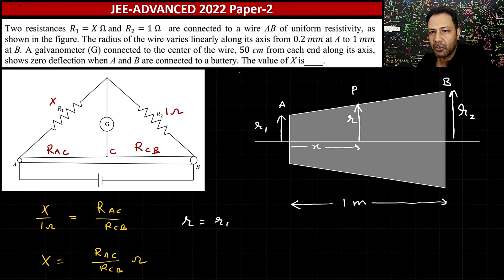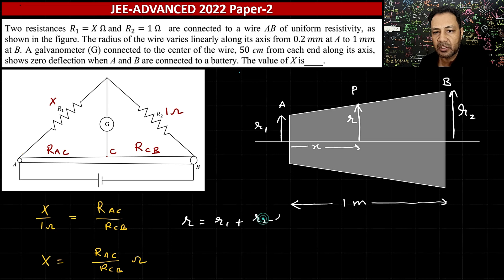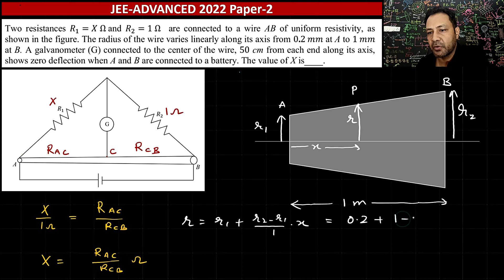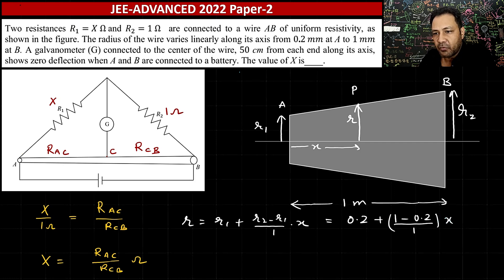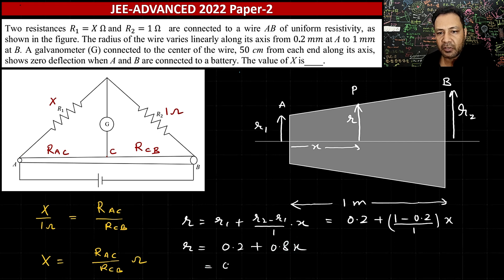The overall length from A to B is 1 meter. Since the radius varies linearly, the radius r at position x is: r = r1 + (r2 - r1)/1 × x. Substituting r1 = 0.2 mm and r2 = 1 mm gives r = 0.2 + 0.8x mm. Taking 0.2 common: r = 0.2(4x + 1) mm.